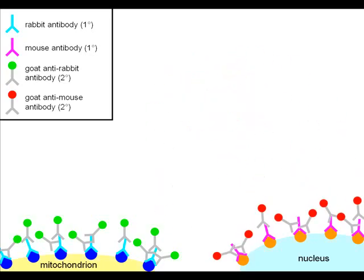Now we've successfully tagged two organelles with different colors. The important thing to remember is that the primary antibodies must be made in different animals, but the secondary antibodies can be made in the same animal to target different primary antibodies.